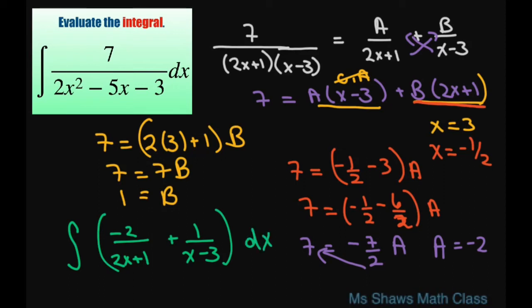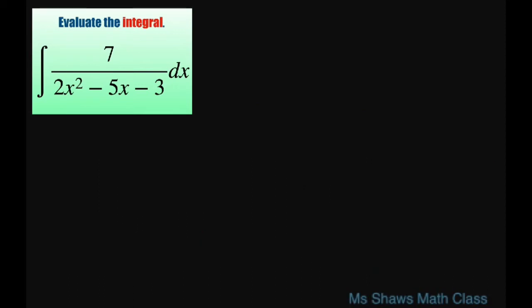Let's go ahead and take care of that. I'll write it really fast. So we had negative 2 divided by 2x plus 1 plus 1 divided by x minus 3 dx.